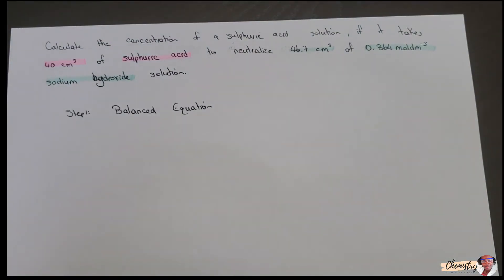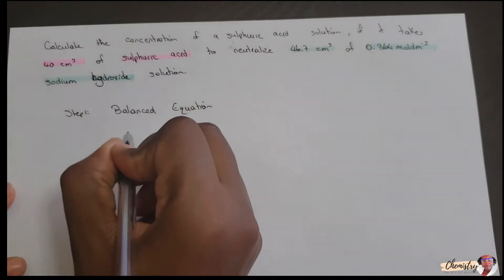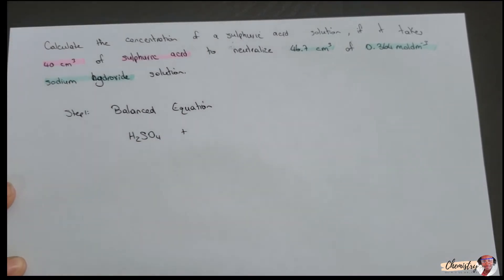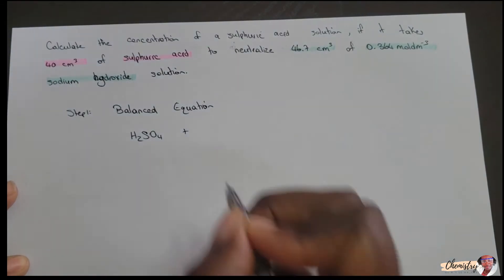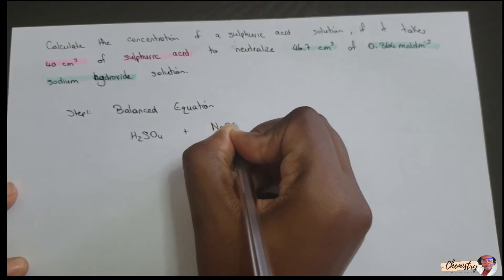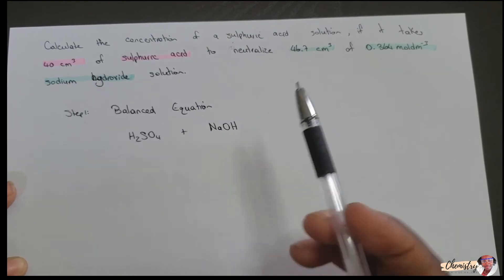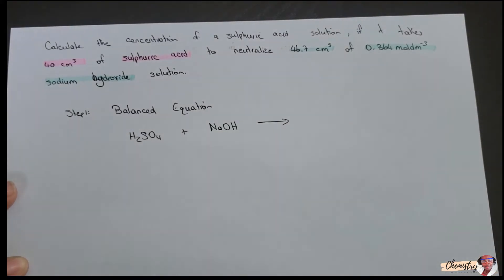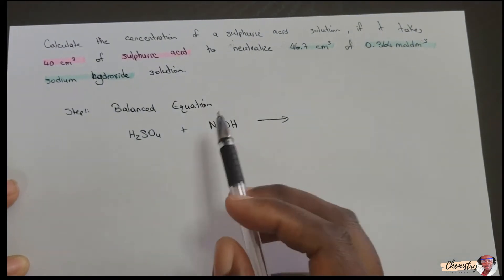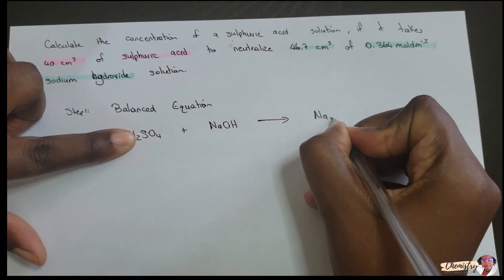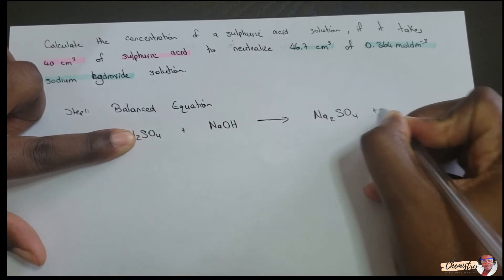Step one says we should write the balanced equation for the reaction. We have sulfuric acid, H₂SO₄, and sodium hydroxide, NaOH. We have an acid and an alkali, and whenever we have an acid and a base, the products would be a salt — formed when the metal replaces hydrogen — so we would have sodium sulfate and water.